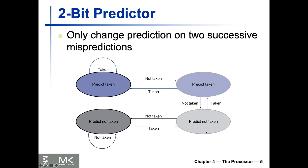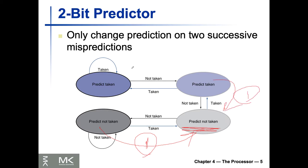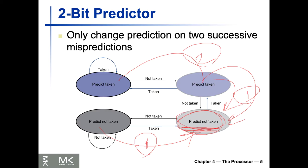Arriving at a state with two successive mispredictions — either starting from 'predict taken' going to weakly taken, or arriving here in two hops. No matter what, being in the weakly taken state means we already had at least one misprediction. If we are at 'predict not taken' and then we take it, that's another misprediction — at best we'll have two mispredictions, and that's why we switch sides again.